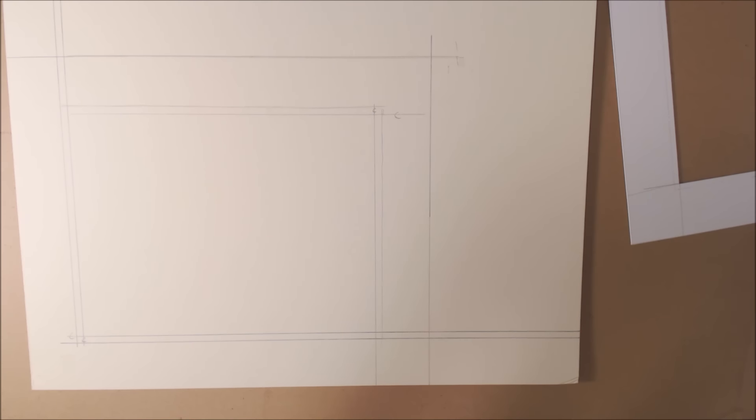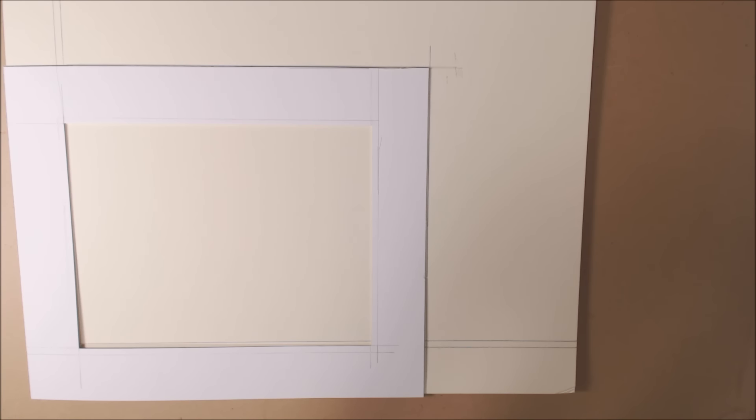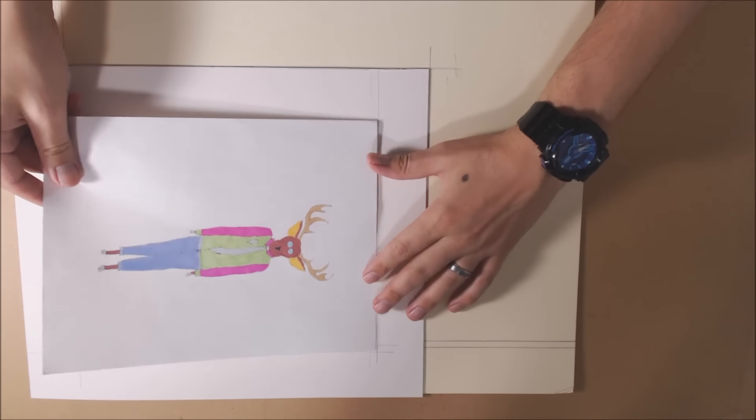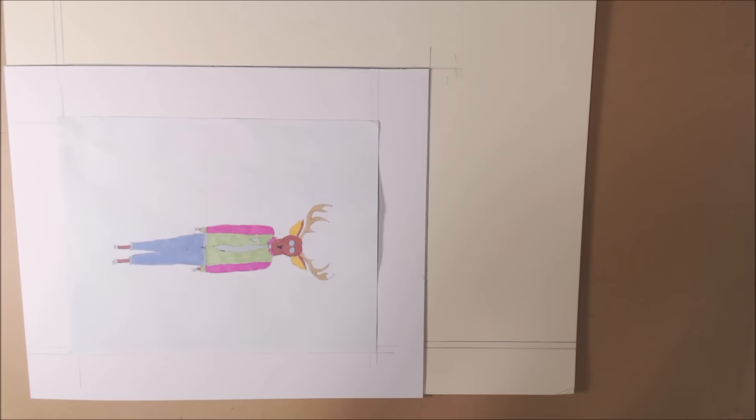We can use a mat cutter to remove the inside window and the outside of the mat board. Once you've removed the inside of the mat board, this is what you'll have left. Take our artwork, line it on top of the trace lines and then using the masking tape tape down our artwork.